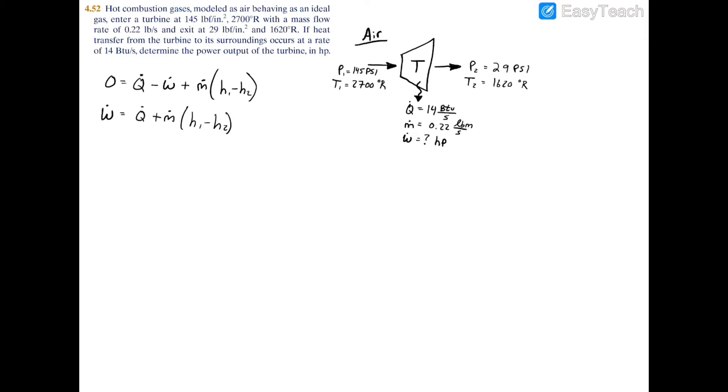Now if we use some simple algebraic rearrangement, we'll have that the power is equal to the heat transfer plus the mass flow rate times the difference in specific enthalpy. Just to keep things simple, let's solve for the power in btu per second first. So we're going to have that the power equals, and we'll keep the heat transfer in btu per second, so we'll have negative 14 btu per second, and the reason it's negative is because it's leaving the system. If it was entering the system, it would be a positive number.